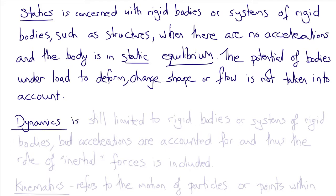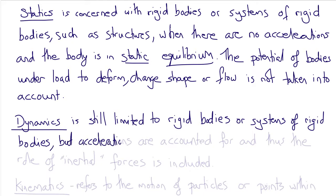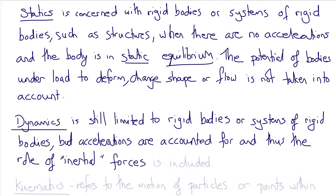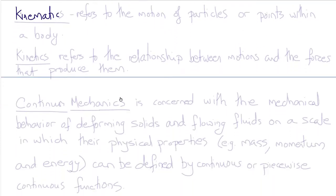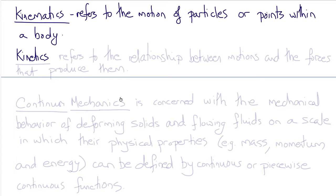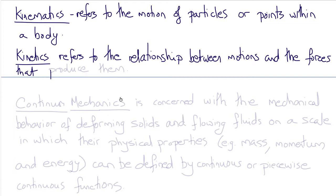In dynamics, we're still limited to rigid bodies or systems of rigid bodies, but now accelerations are included, and therefore the role of inertial forces comes into play. Inertial forces are the forces associated with accelerating masses, i.e., the forces that you calculate using F = ma. Bodies that are accelerating and have inertial forces are not in static equilibrium. Kinematics refers to the motion of particles or points within a body, and kinetics refers to the relationship between the motions and the forces that produce them.